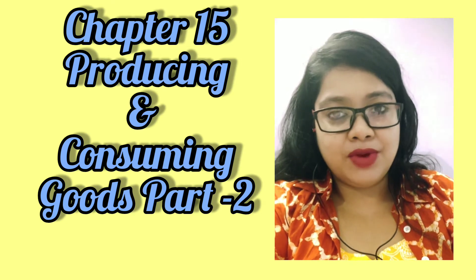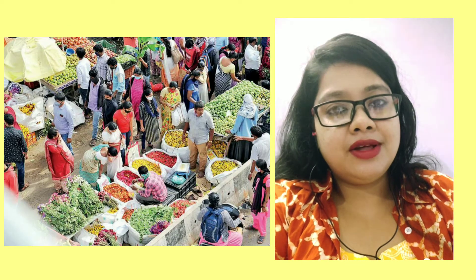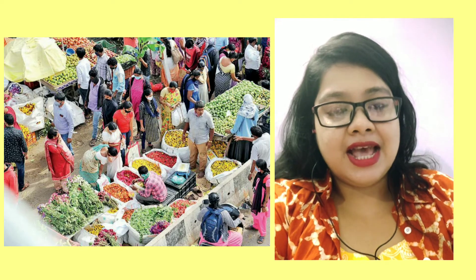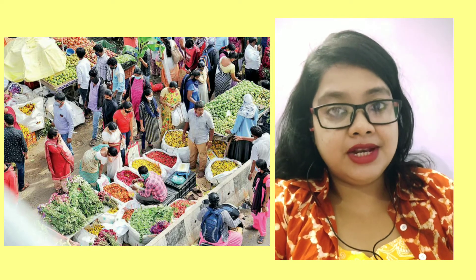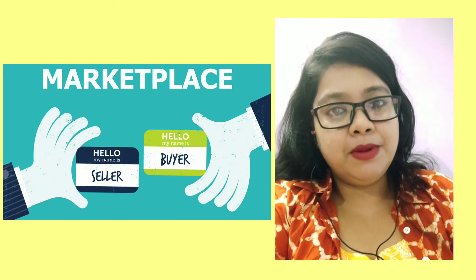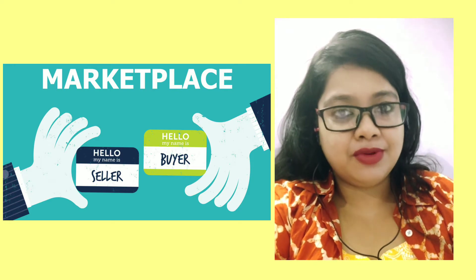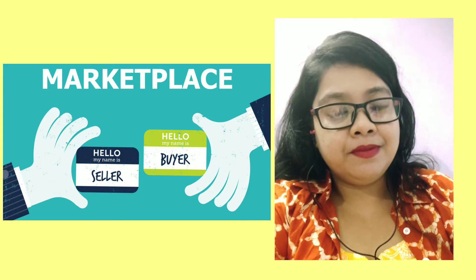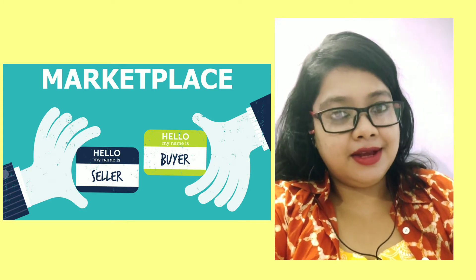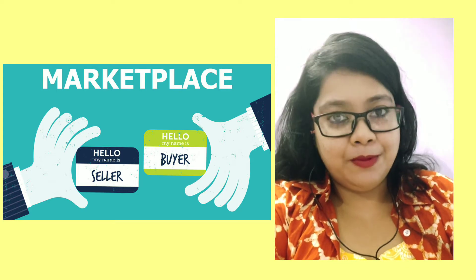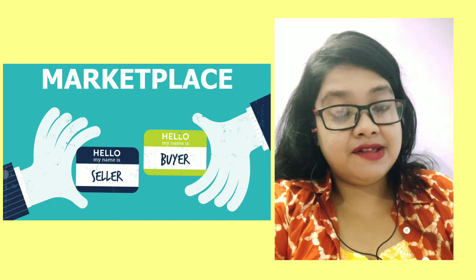The most important thing we will discuss today to end the chapter is about the market. A market is essentially a place where buyers meet sellers. It is a place where sellers and buyers meet to sell and buy finished goods respectively. Often producers act as sellers.